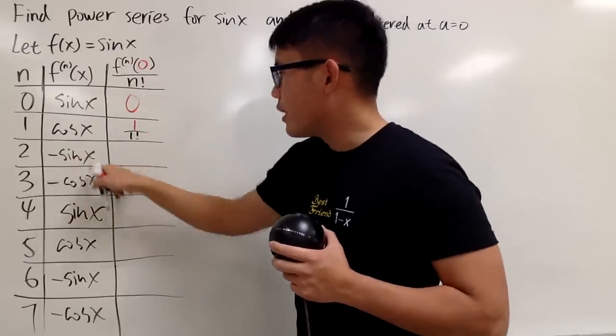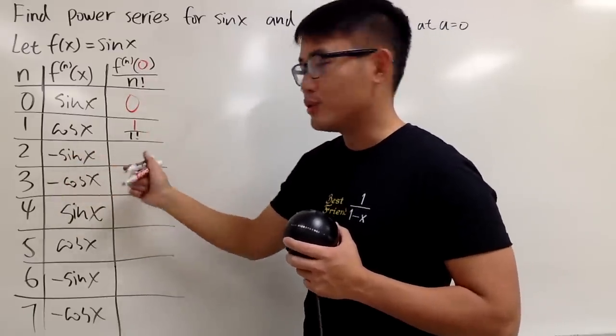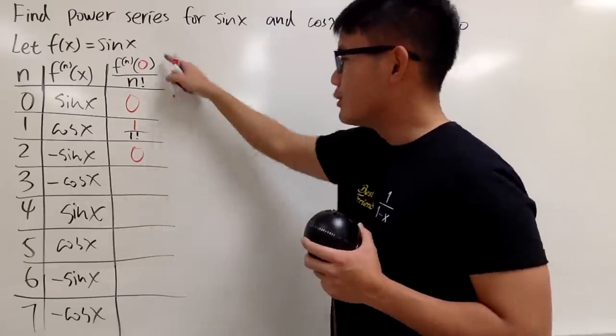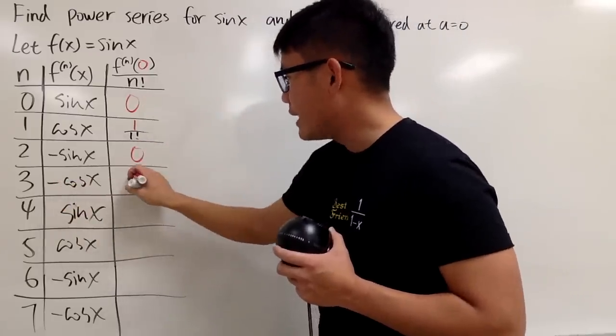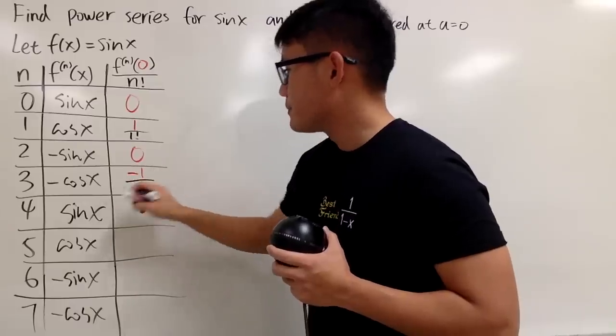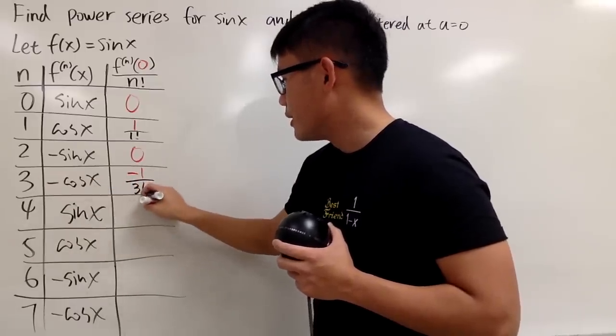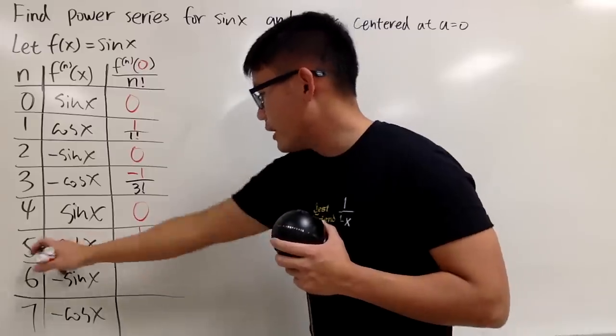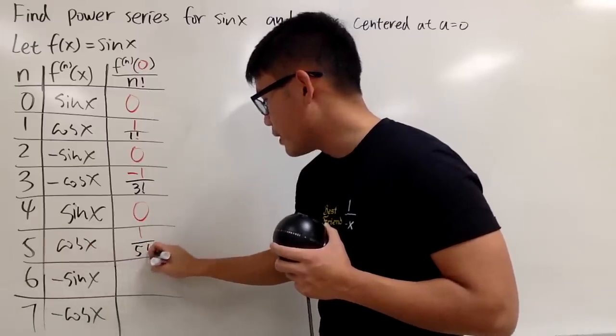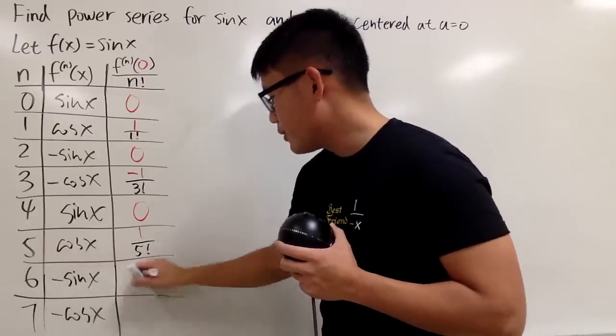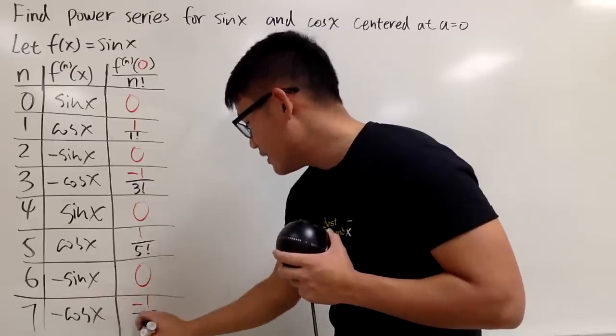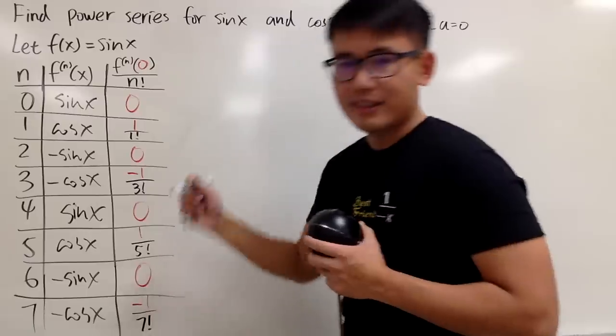Next, put zero in here. We have negative sin 0, which is still 0, over 2 factorial, still 0. Next, you put zero right here. You get negative 1 over 3 factorial. Put zero here, you get 0. Put zero here, you get positive 1 over 5 factorial. Put zero here, you get negative 1 over 7 factorial.